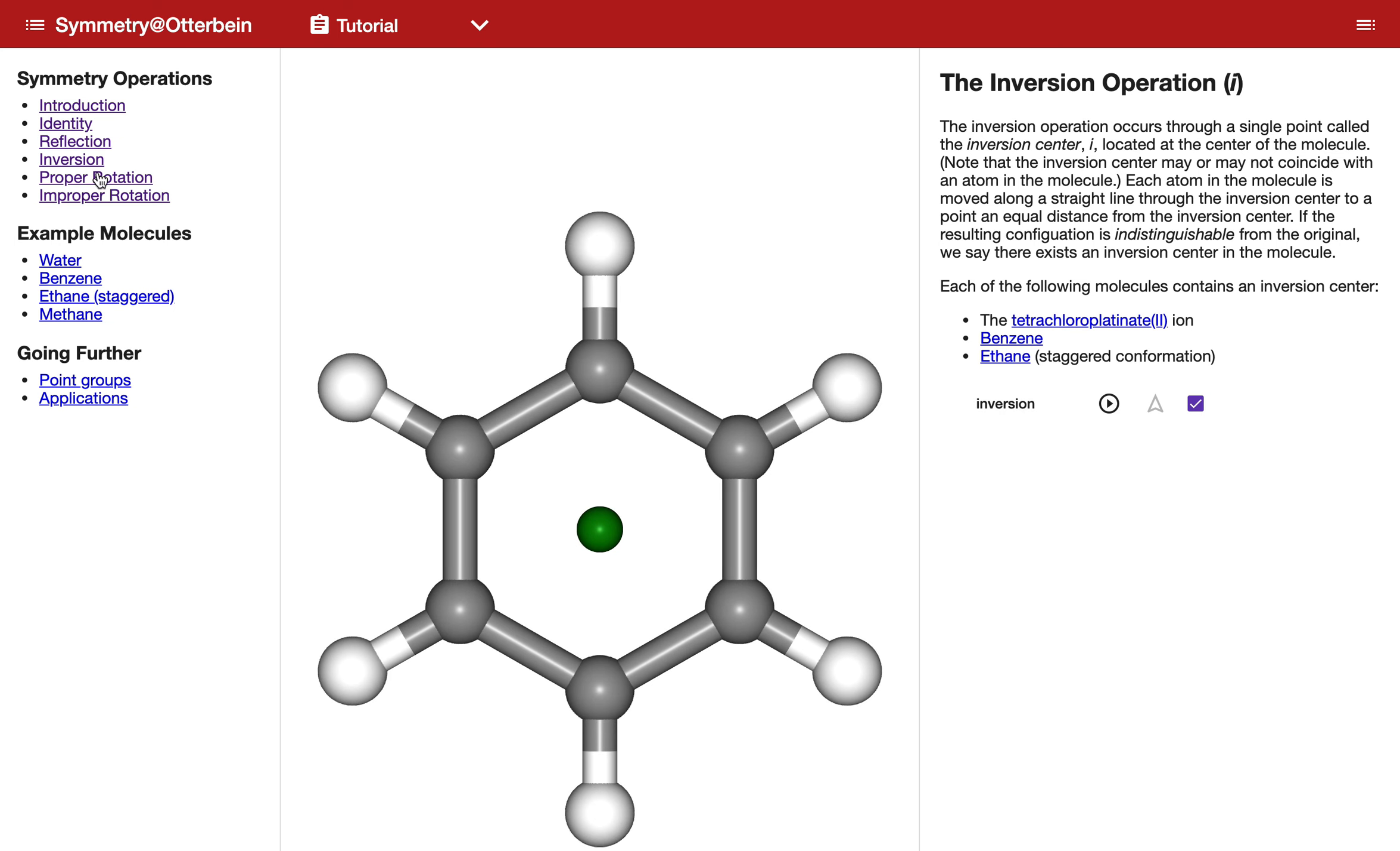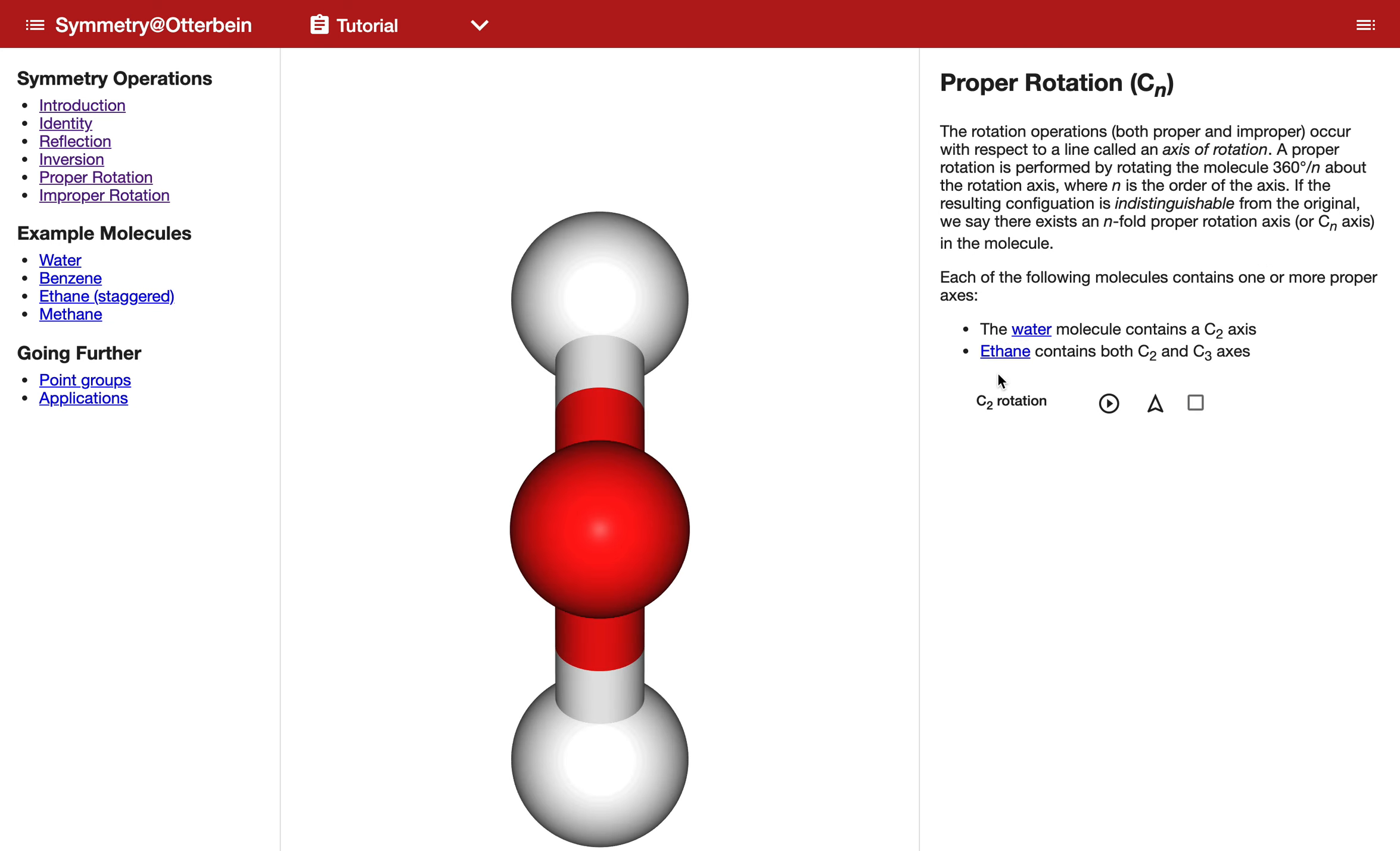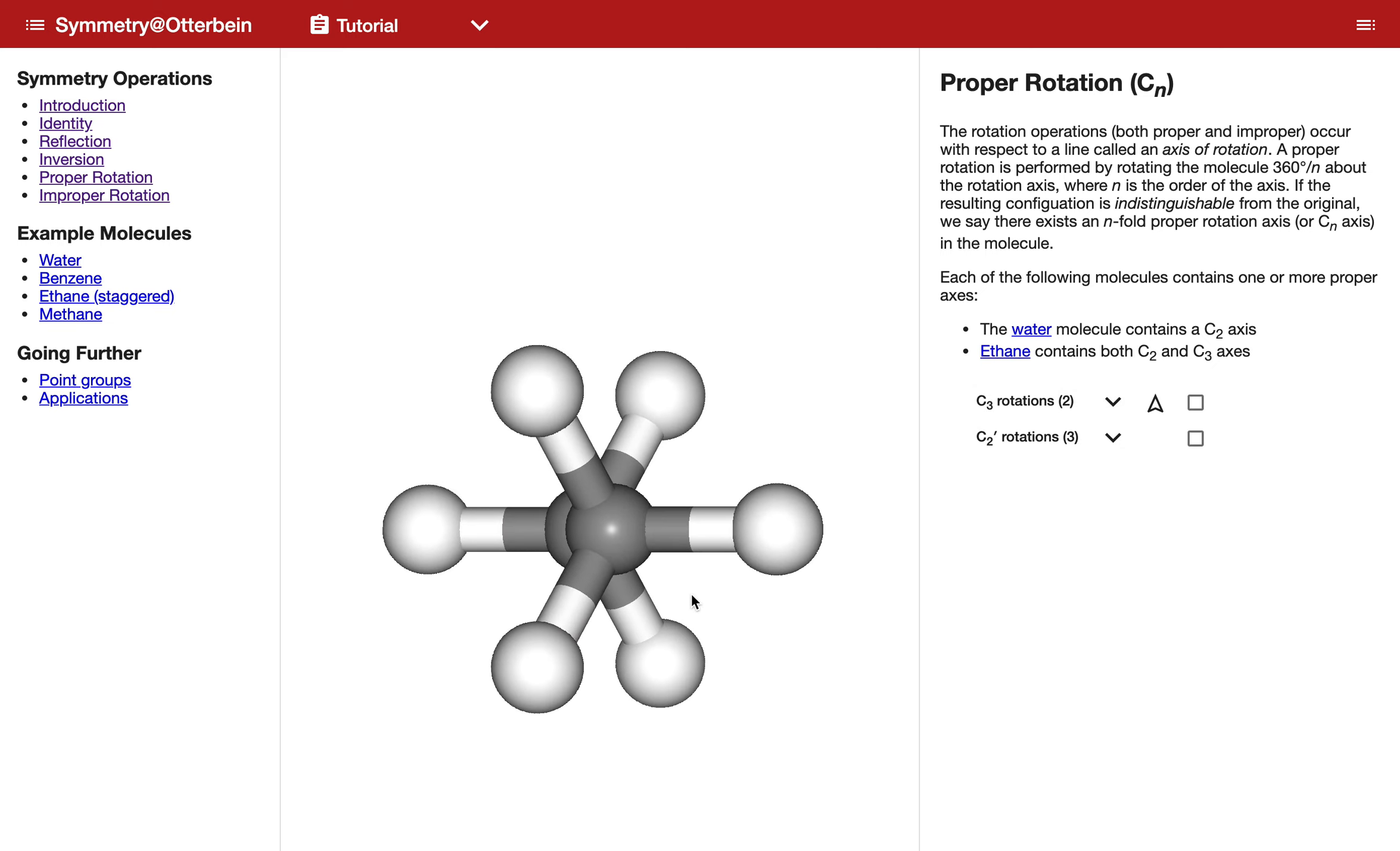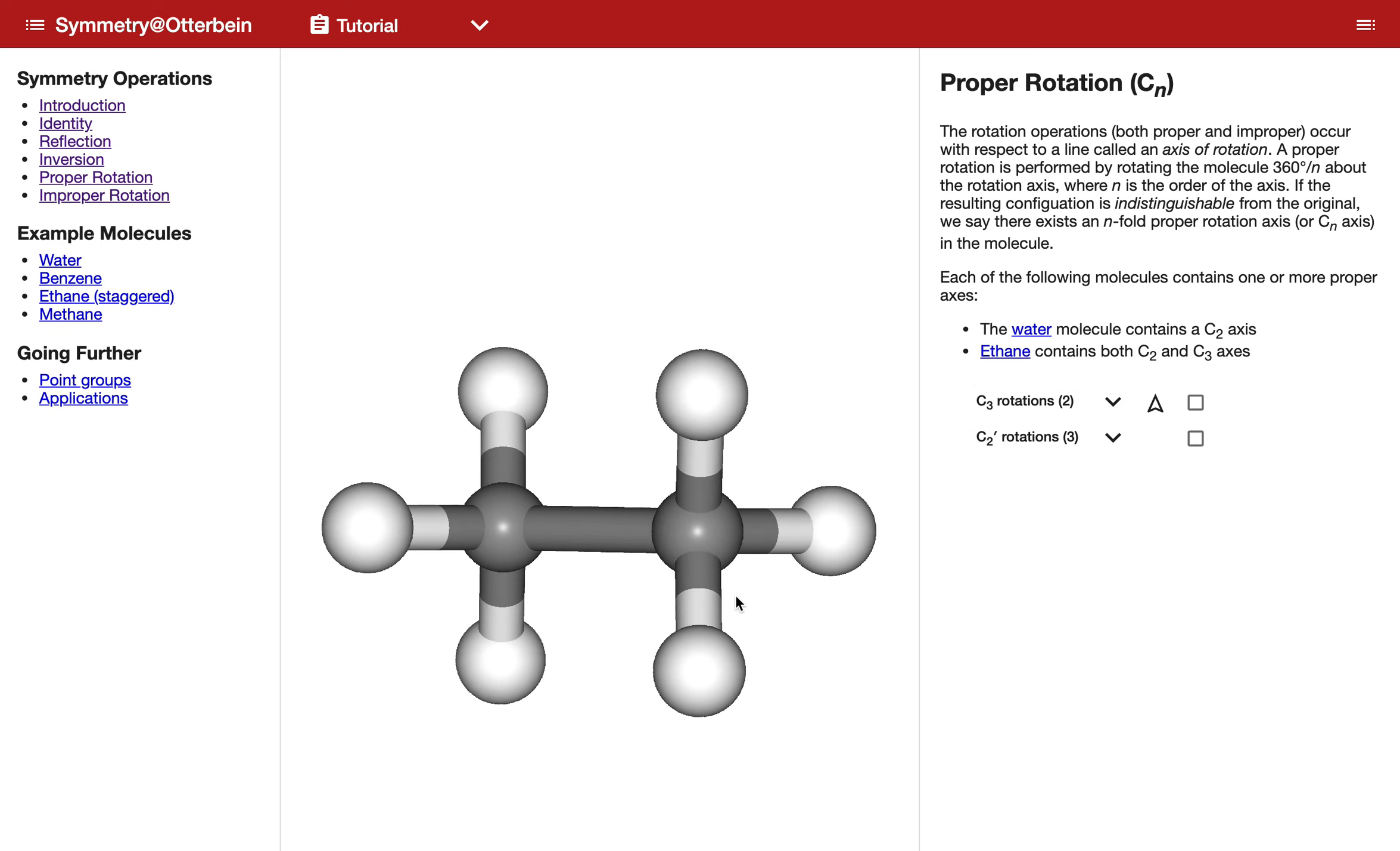If we look at proper rotation, I'm going to use ethane as my model here. Here's ethane; we're looking at it end-on. If we turn it a little bit so that we can see the carbon-carbon bond, we can now look at a couple of different types of rotation. You'll see that there's two listed here: C3 and C2.